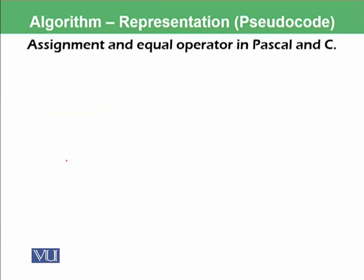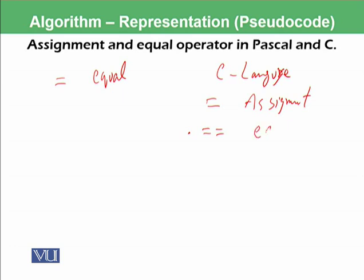You should not confuse yourself between assignment and equal operator. As we mentioned, in mathematics, this is equal. There are different languages which consider this differently. In C language, this is assignment, and to represent equal, C language uses double equal.